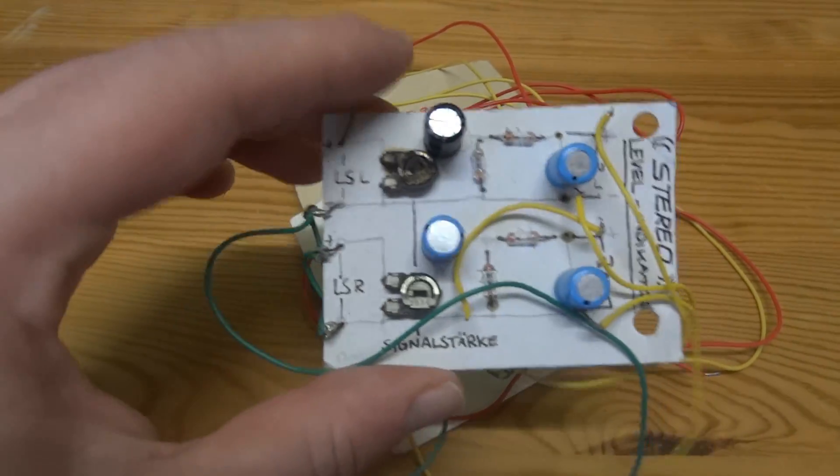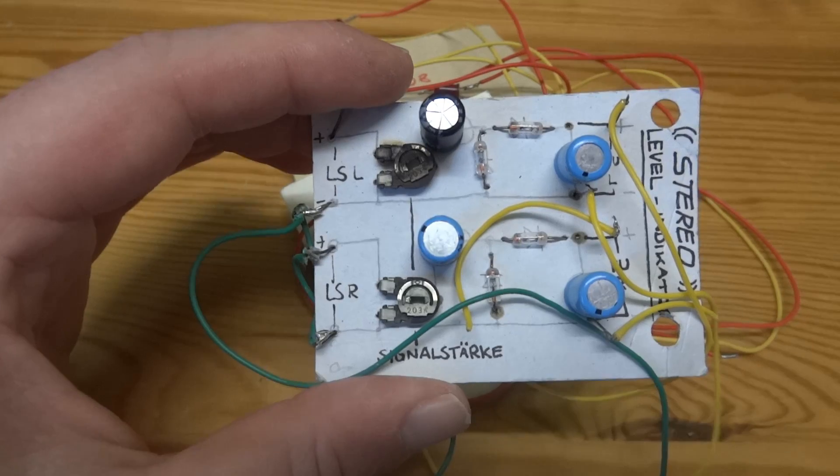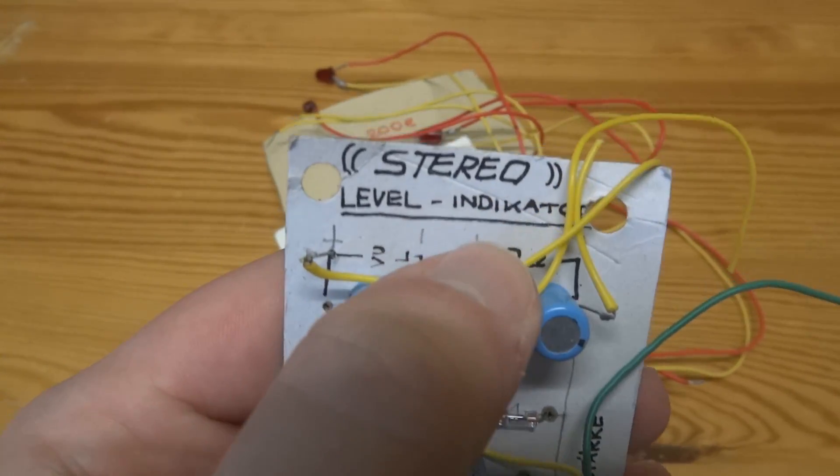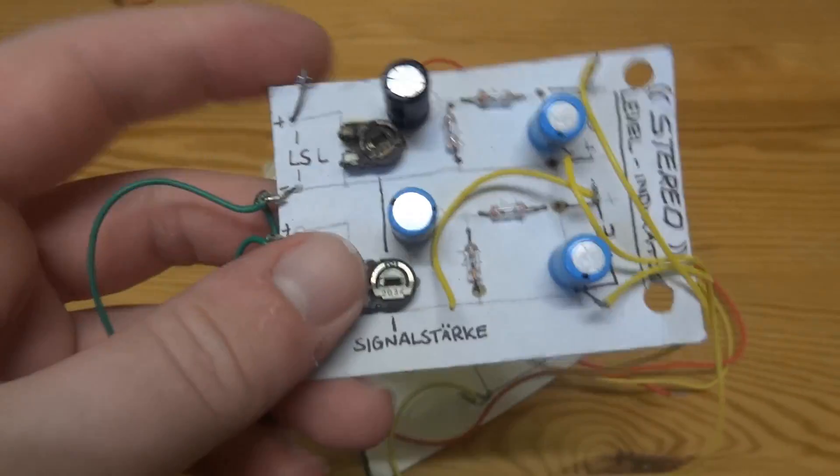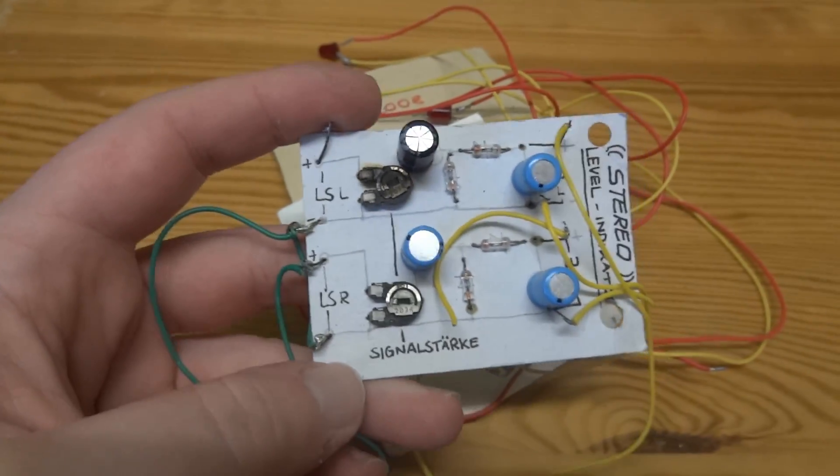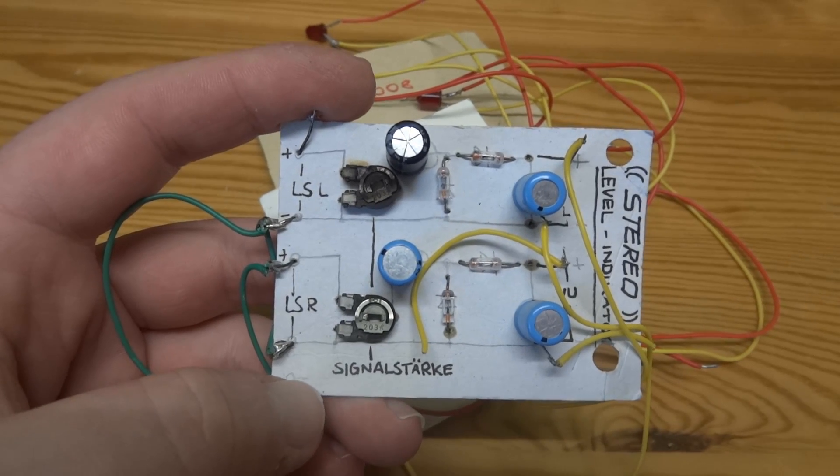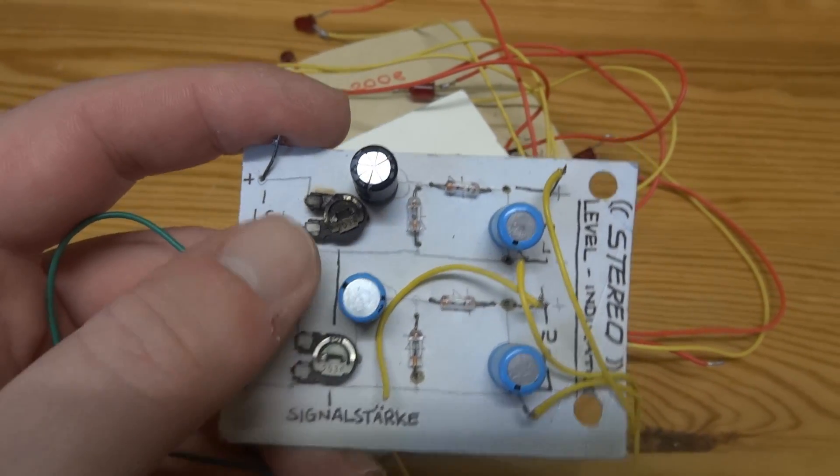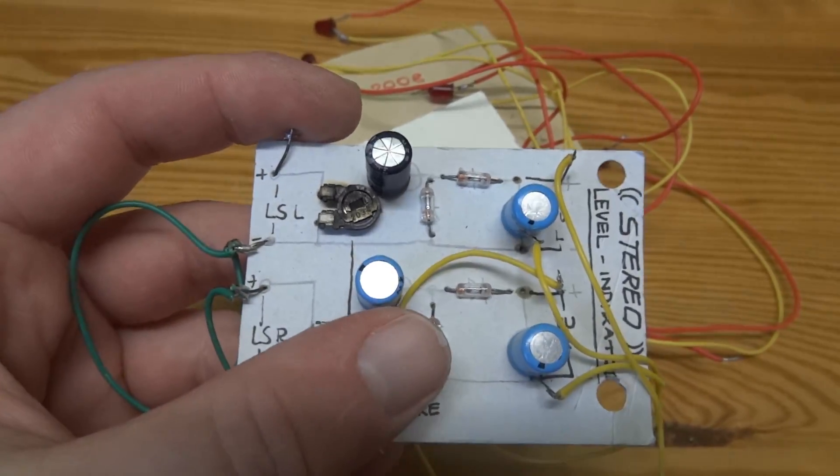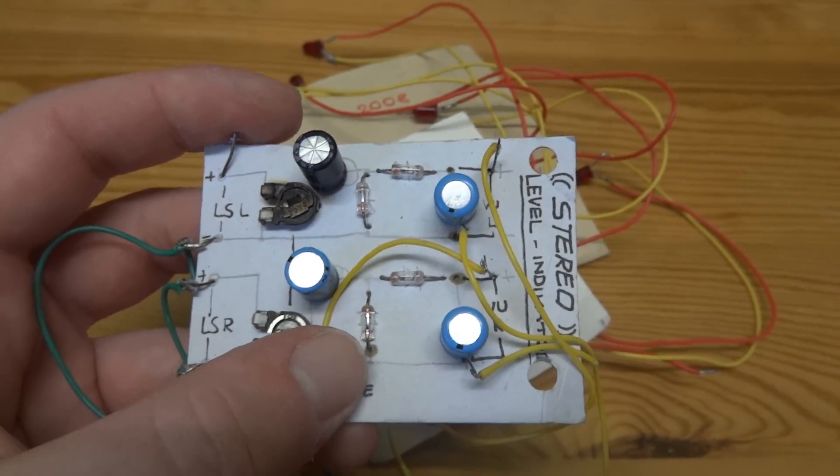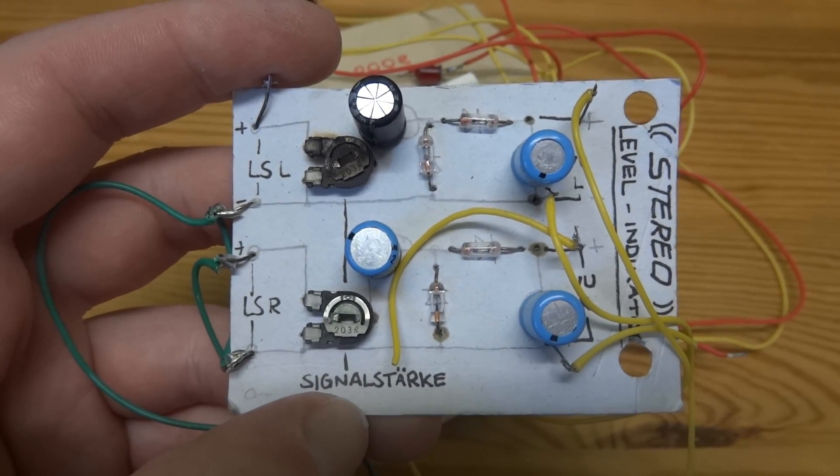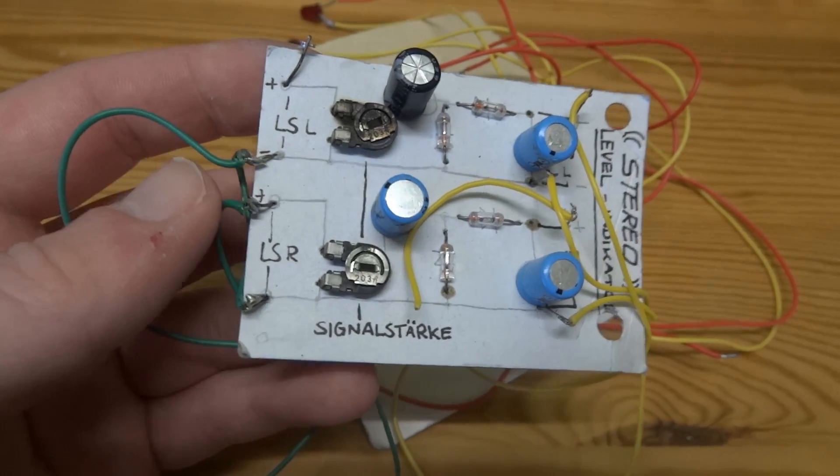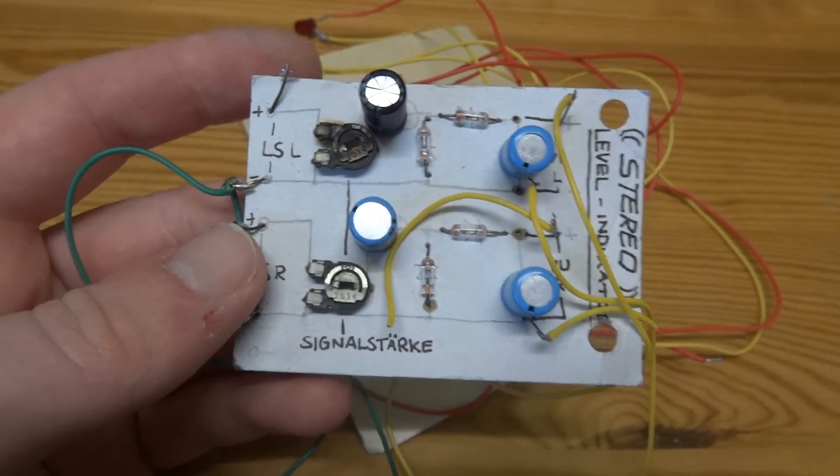Next up we have the exact same thing except this one is in stereo as it proudly says up there. So once again same circuit except of course now it's all there twice. We got two signal strength settings, got capacitors, rectifier, output capacitors. Yellow leads would go out to a set of two analog meters. The green wires obviously would come from the speaker outputs.